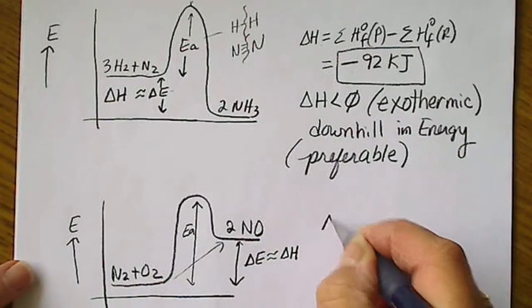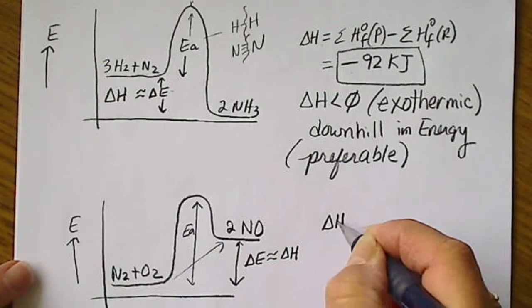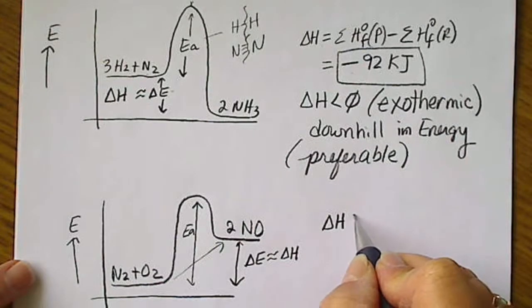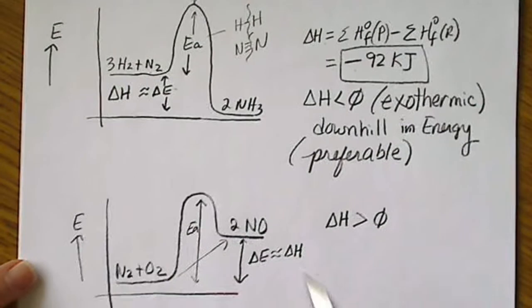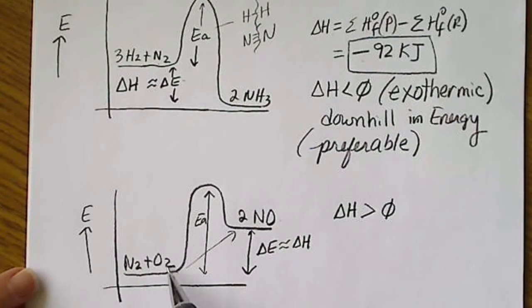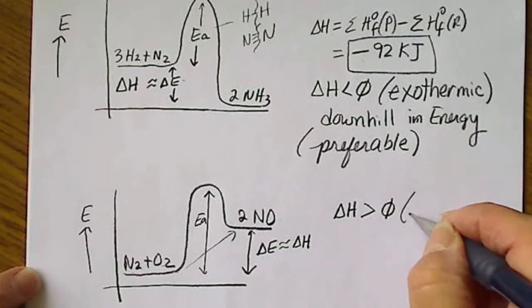And if I calculated the delta H for this, which I didn't do ahead of time, this would be a value greater than zero because our product's value is higher in energy than the reactants. And the heats of formation for elements, recall, those values are zero. So this is endothermic.